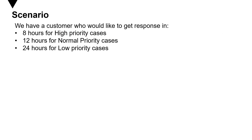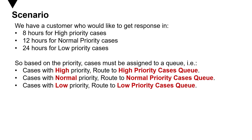We have a scenario where a customer would like to get a response within eight hours for high priority cases, within 12 hours for normal priority cases, and 24 hours for low priority cases. Based on the priority, the cases must be assigned to a queue — cases with high priority route to the high priority cases queue, cases with normal priority route to the normal priority cases queue, and cases with low priority route to the low priority cases queue.